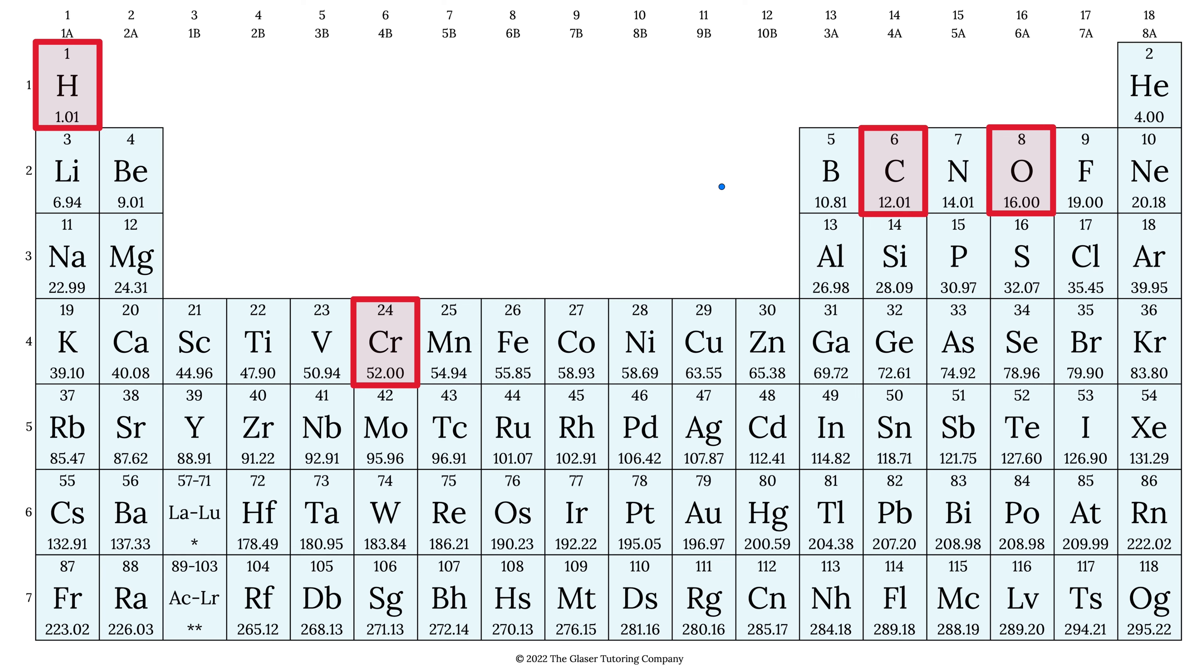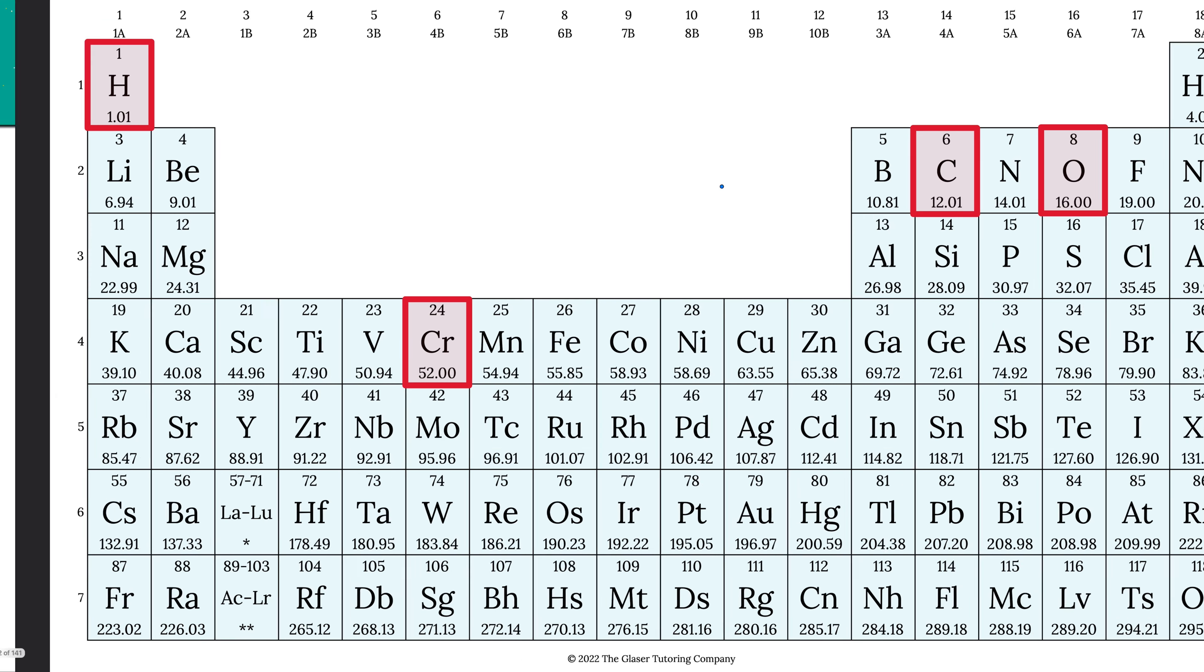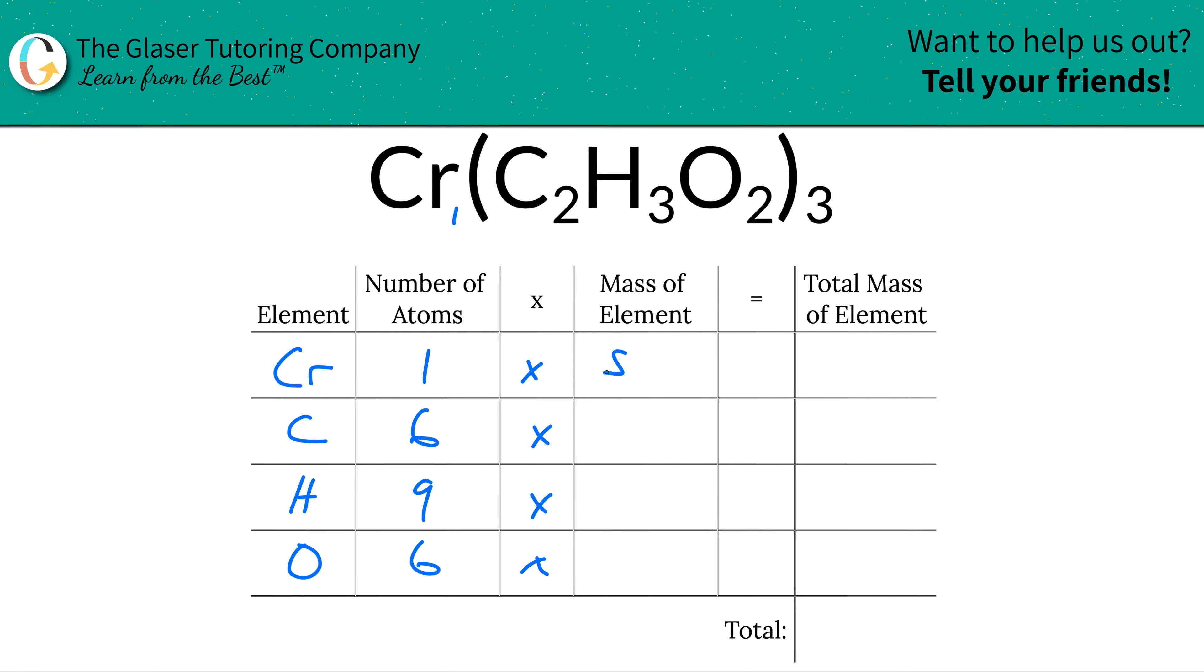The magnitudes are the same, but the units are different. But quite honestly, who cares? Let's just plug it in. So chromium is 52. Carbon is going to be 12.01. Hydrogen is going to be 1.01, and oxygen is 16.